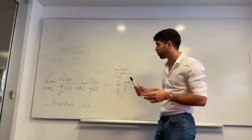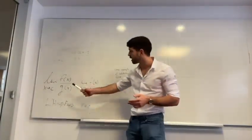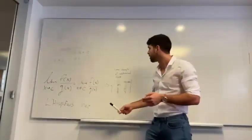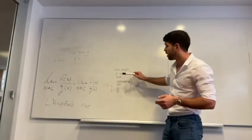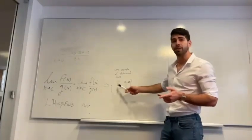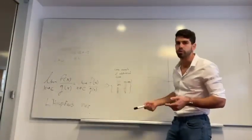L'Hospital's Rule essentially works when we get terms like f(x) divided by g(x), and we get indeterminate forms of values such as infinity divided by infinity, 0 divided by 0, and so on and so forth.